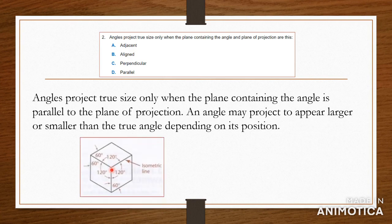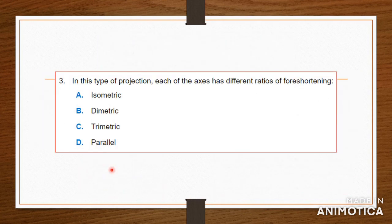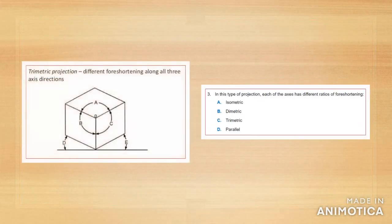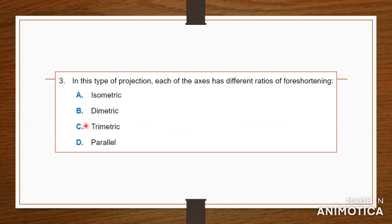So the answer to number two is D — parallel. Number three: in this type of projection, each of the axes has different ratios of foreshortening. If you look at the drawing, all the angles are labeled differently, meaning each angle is different on each side of the axis. That would be trimetric — and that would be your answer.